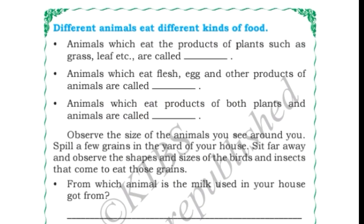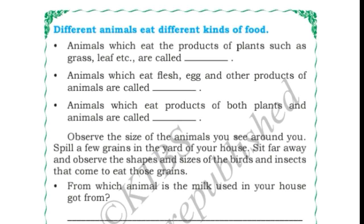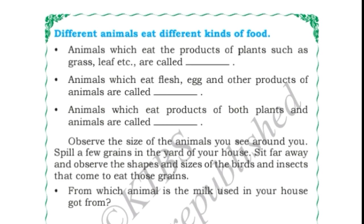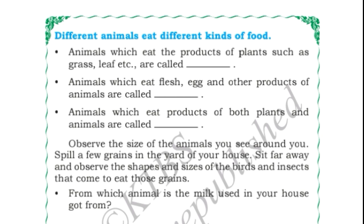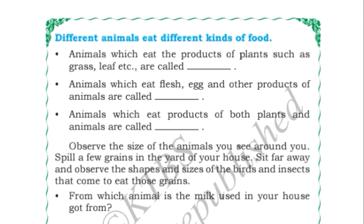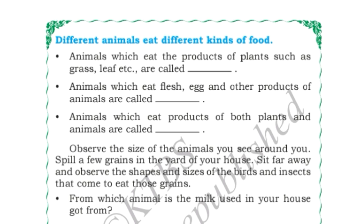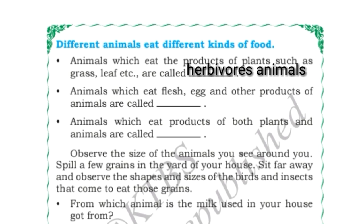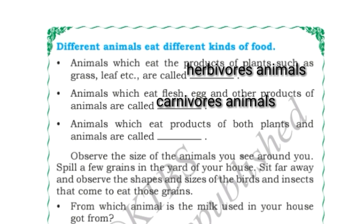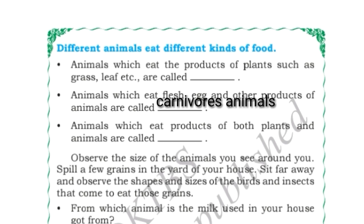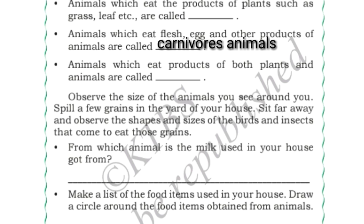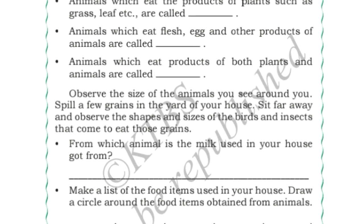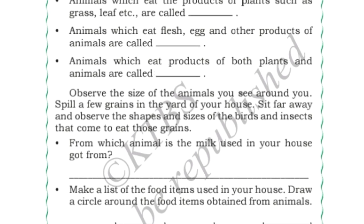Different animals eat different kinds of food. Based on what animals eat, they are classified into three groups — we have already studied this in third standard. Animals which eat products of plants such as grass and leaves are called herbivorous animals. Animals which eat flesh, eggs, and other products of animals are called carnivorous animals. Animals which eat products of both plants and animals are called omnivorous animals.